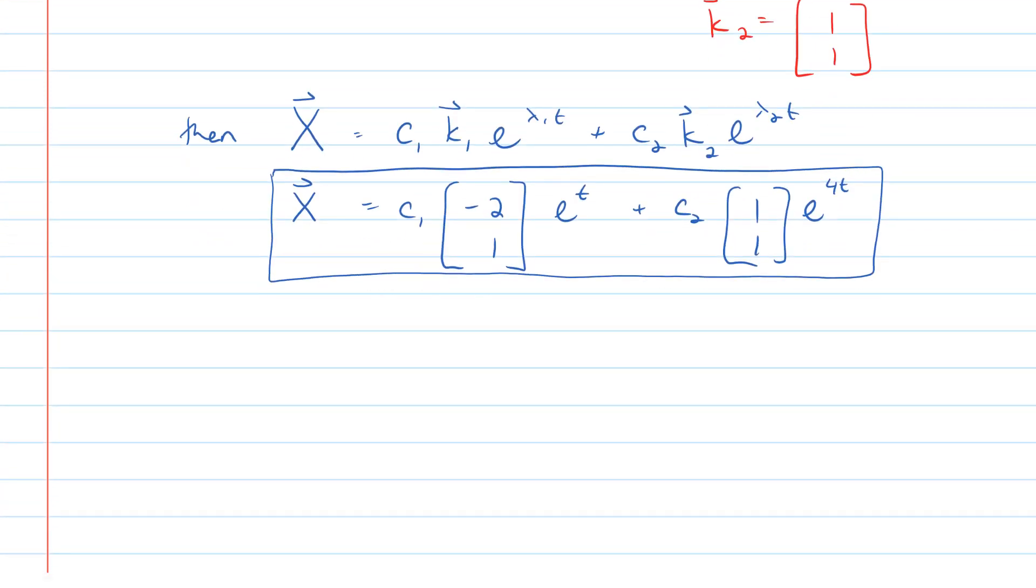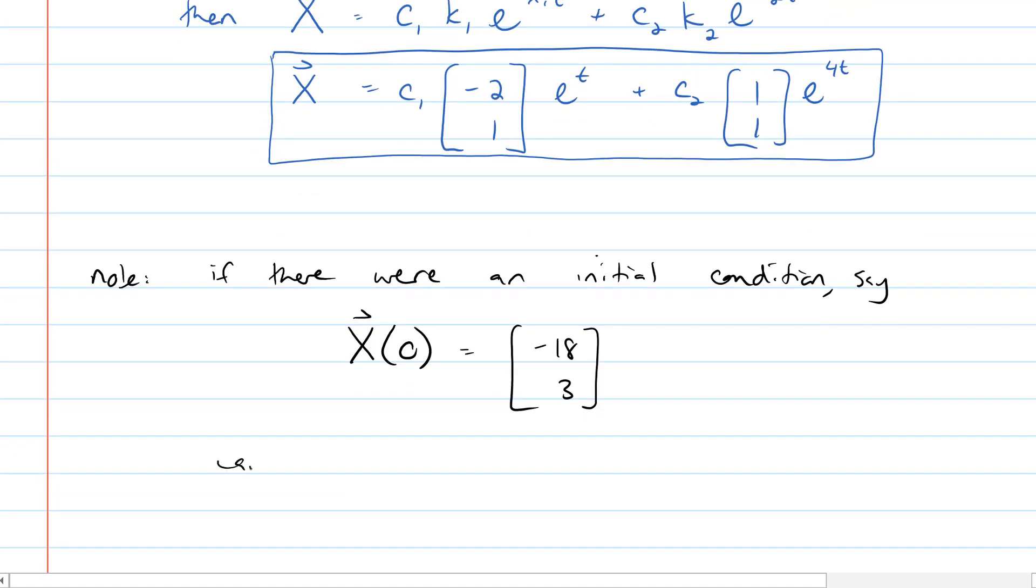Now we're not quite finished yet, because I did want to note that if there were an initial condition, say that capital X of 0 is equal to negative 18, 3, or something like that, you can solve for c1 and c2.